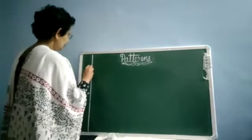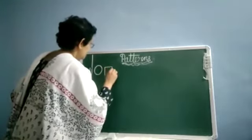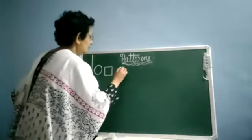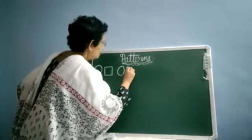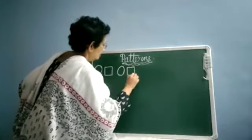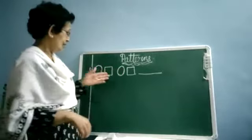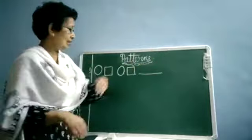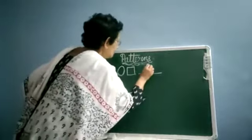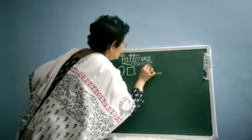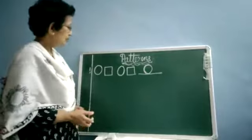Our first pattern is one circle and one square. Next will come again one circle and another square. Now what is the third one? Which pattern is going to come next? Whatever is the first one, it will repeat again and again. Like this it will repeat. So here I will draw the circle. Now these are one pattern.